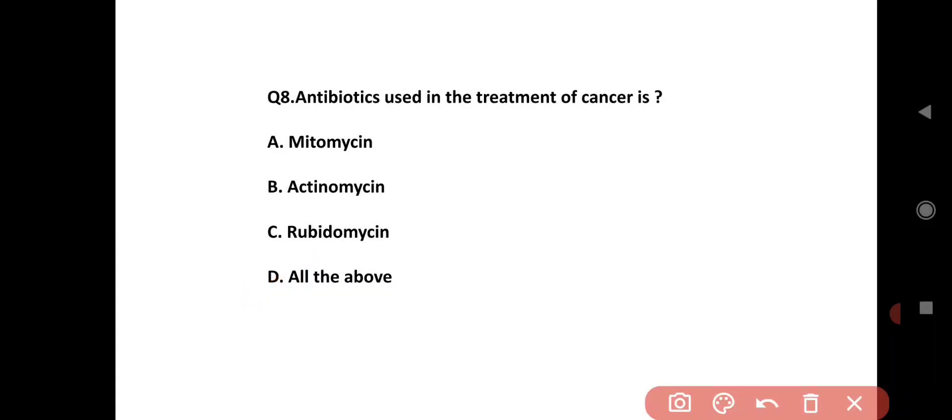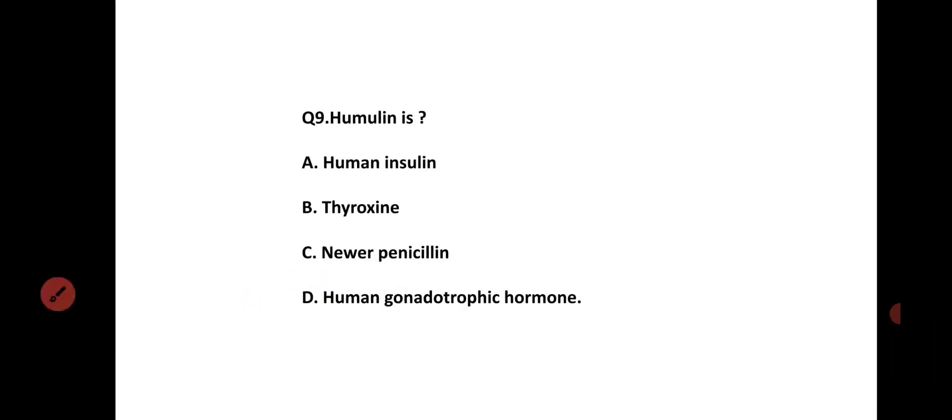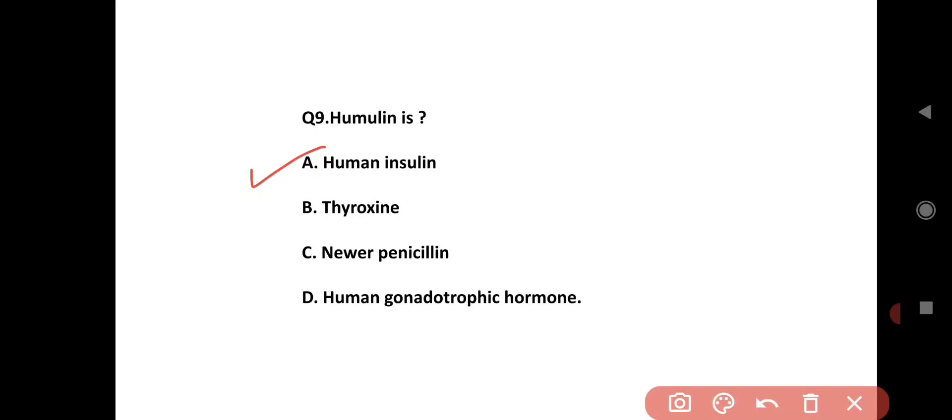Humulin is: Option A is human insulin, Option B is thyroxine, Option C is penicillin, Option D is human gonadotropic hormone. The correct answer is Option A, human insulin.